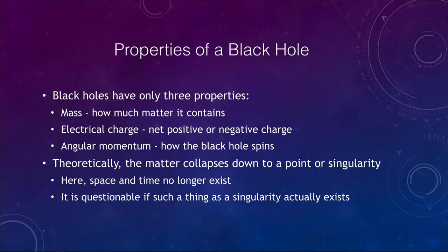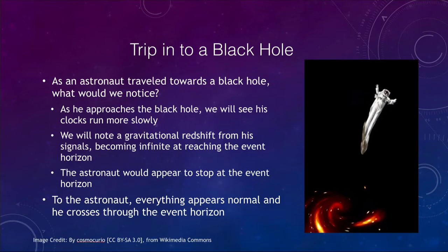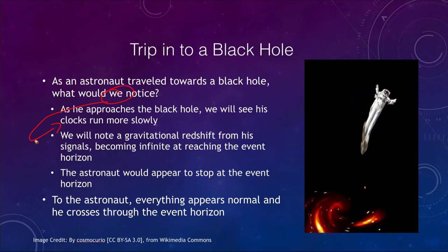Now let's imagine a trip into a black hole. If an astronaut were to travel towards a black hole, as he approaches, clocks begin to run more slowly. Remember that the closer you get to a strong gravitational field, the slower clocks will run — we can notice that even here on Earth with clocks in orbit versus clocks on the Earth's surface. In a black hole it would become even more extreme. This is what we would notice as observers watching: we would see the astronaut's clocks run more slowly.